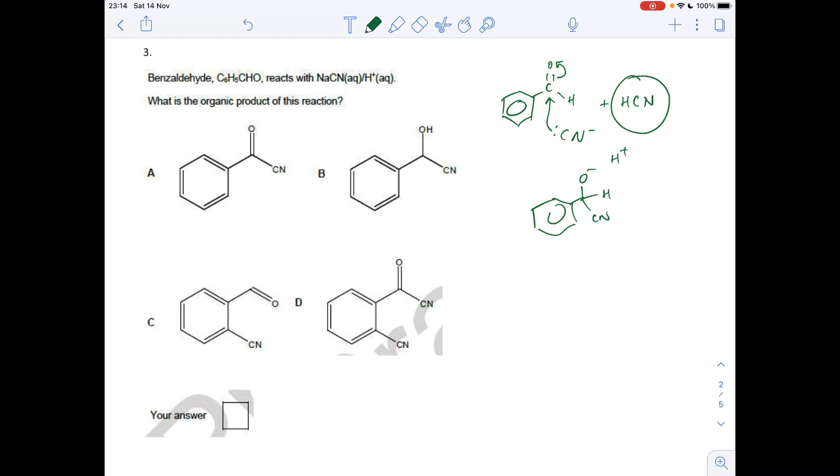And then the H from the HCN, H plus, and then just put that lone pair on, it's going to grab that. So obviously that's going to become an OH group, and so therefore the product is B.